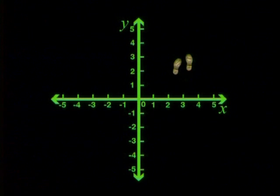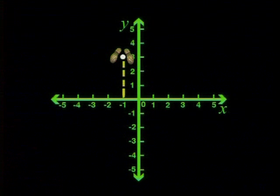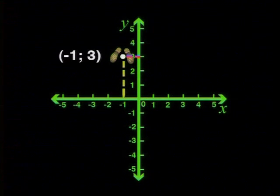Go for it. How about this one? If I trace this point back to the x-axis, its x-coordinate is negative 1. And its y-coordinate is 3. So this is the point (-1, 3). That was really good.